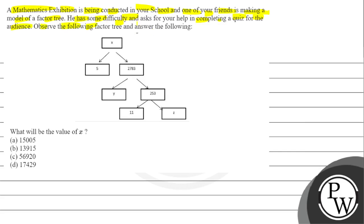Observe the following factor tree and answer the following: What will be the value of X? Option A is 15,000. Option B is 13,915. Option C is 56,920. Option D is 17,429.